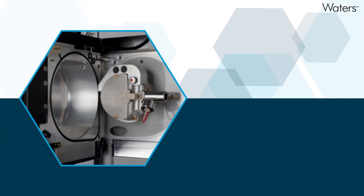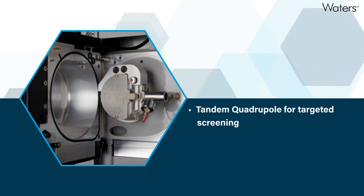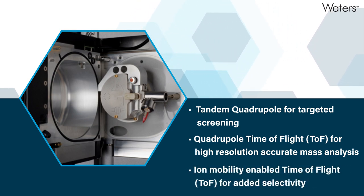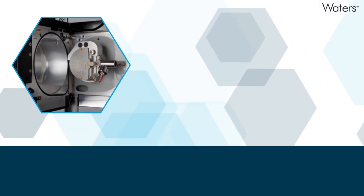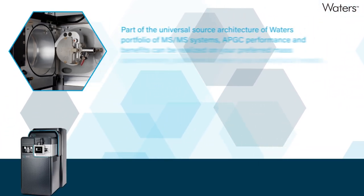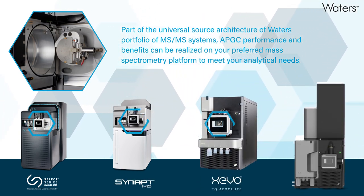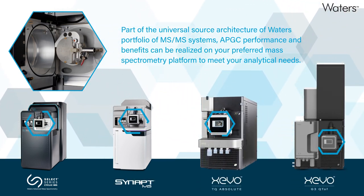APGC's universal source architecture makes it easily adaptable to a variety of mass spectrometer types, including tandem quadrupole for targeted screening, quadrupole time of flight for high resolution accurate mass analysis, and ion mobility enabled time of flight for added selectivity and unparalleled resolving power. Experience the confidence and cost-effectiveness that comes with APGC technology, and take your lab's capabilities to the next level.